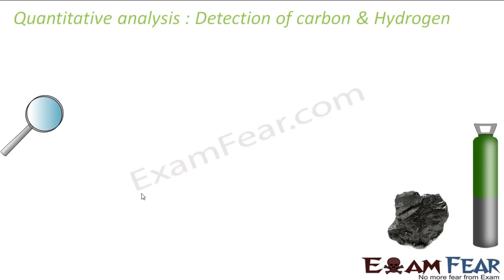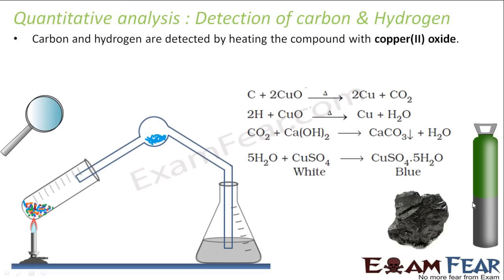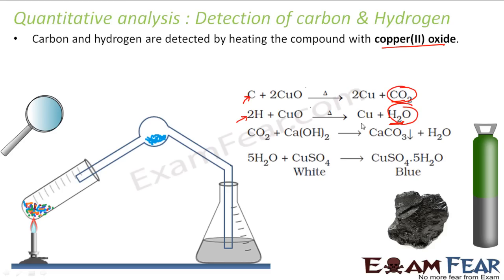Let us start with carbon and hydrogen. How do we detect whether a particular organic compound has carbon or hydrogen? They are detected by heating the compound with copper oxide. If the organic compound had carbon, the carbon will react with copper oxide to give carbon dioxide. If the organic compound had hydrogen, it will react with copper oxide to give water. By measuring the quantities of carbon dioxide and water formed, we can determine how much carbon and hydrogen the organic compound had.